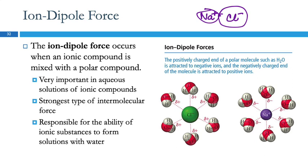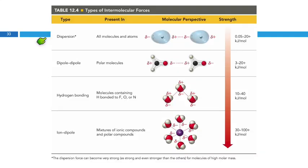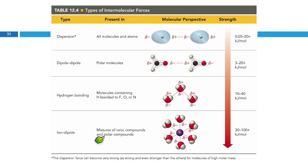Summary: ion-dipole is attraction between an ion and a polar molecule. Dipole-dipole forces are between two polar molecules (two permanent dipoles). Hydrogen bonds are super dipole-dipole forces. Dispersion forces involve spontaneous and induced dipoles that come and go—the weakest. In order of increasing strength: dispersion forces (all substances), dipole-dipole (polar molecules only), hydrogen bonding (H bonded to F/O/N), ion-dipole (ionic + polar compounds).